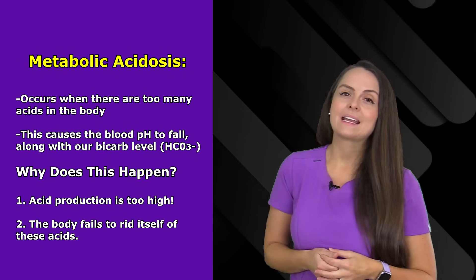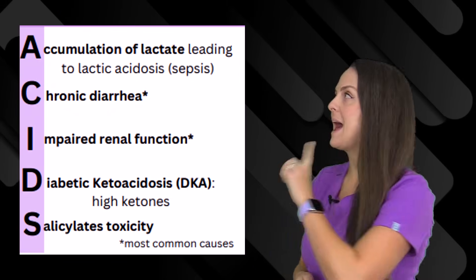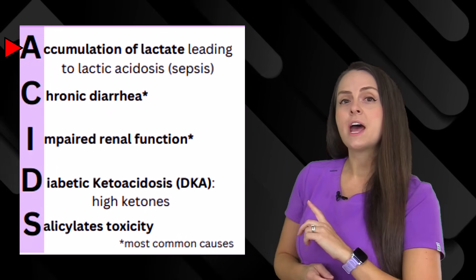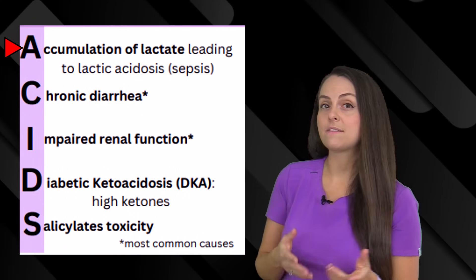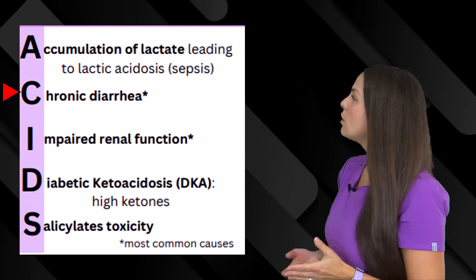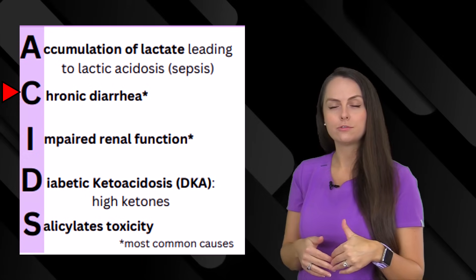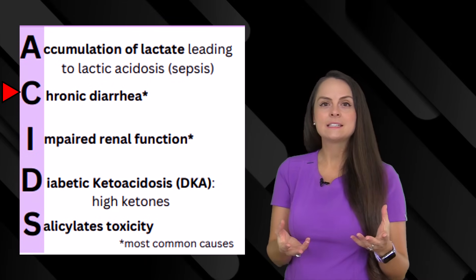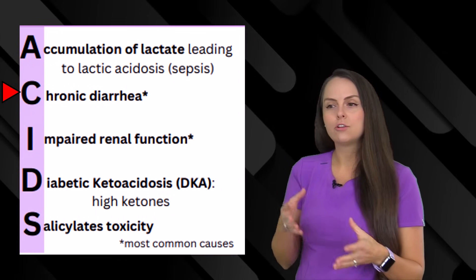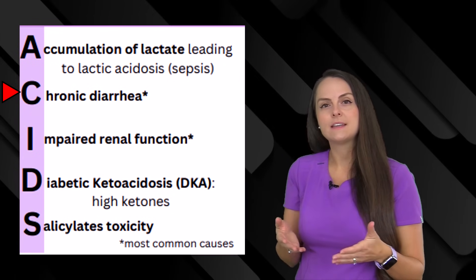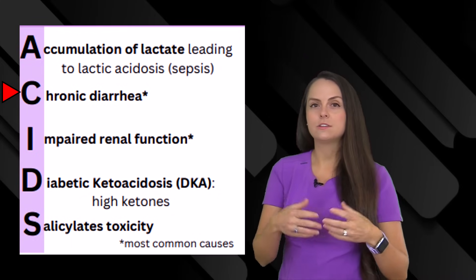To help us remember the causes, let's use the word ACIDS. A is for accumulation of lactate, which leads to lactic acidosis — this happens in cases of sepsis. C is for chronic diarrhea, where the patient is losing too much bicarb through their stool. Bicarb is a basic substance that helps neutralize acids, so losing it means losing the ability to keep acids in control, which can lead to acidosis.